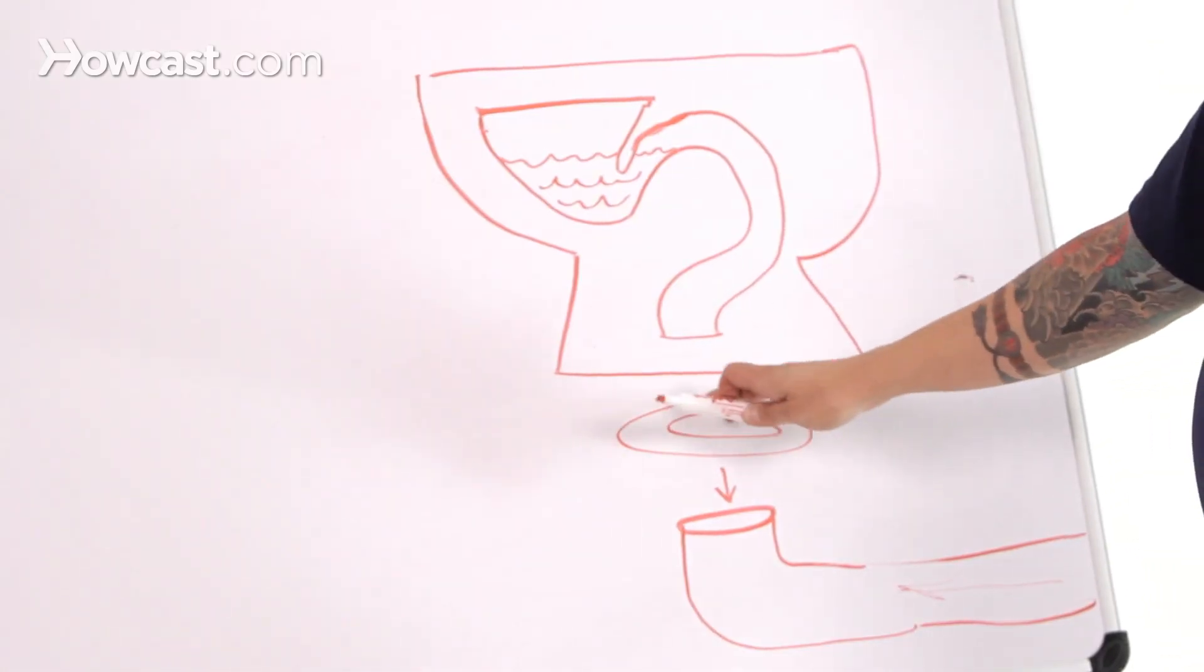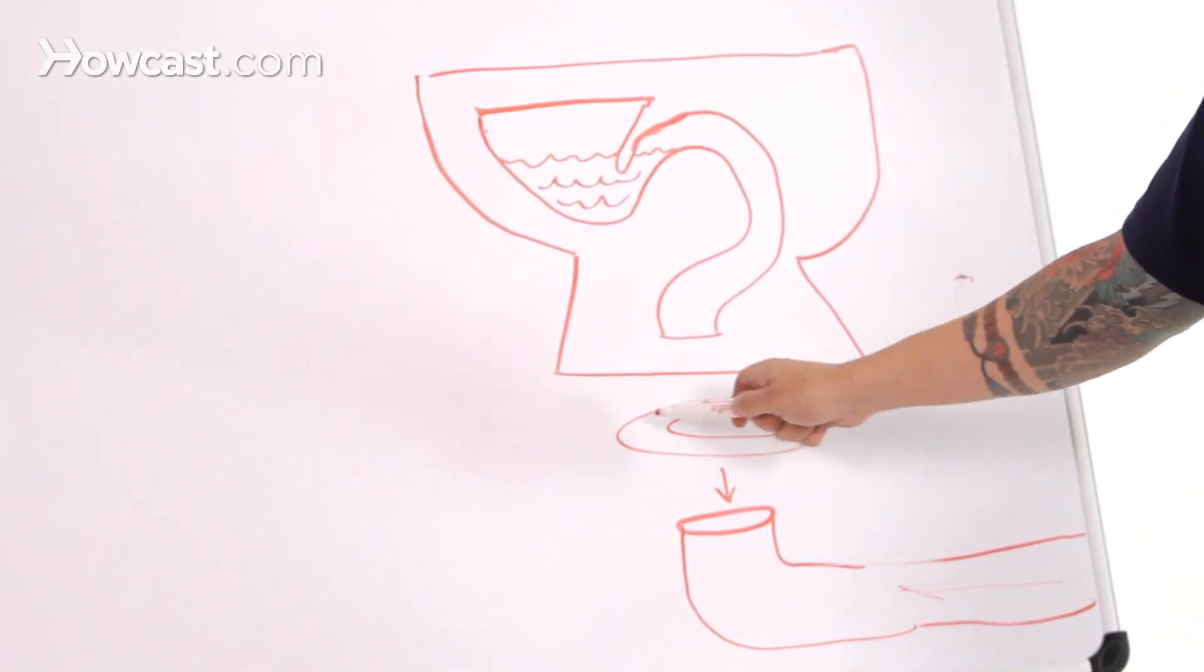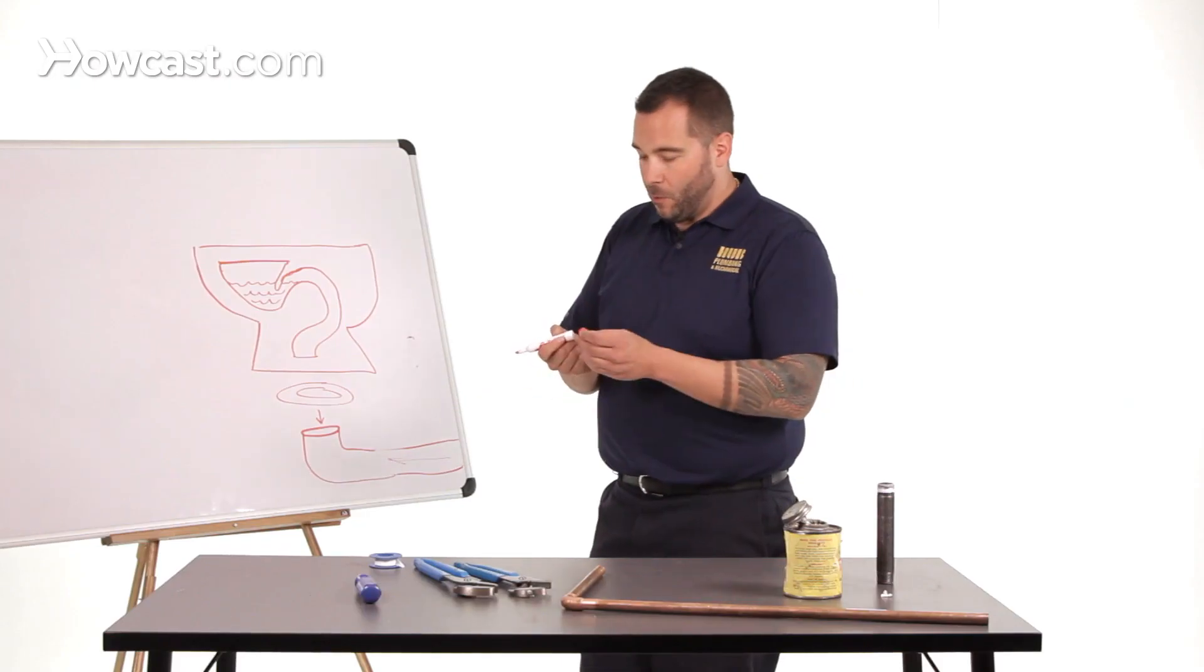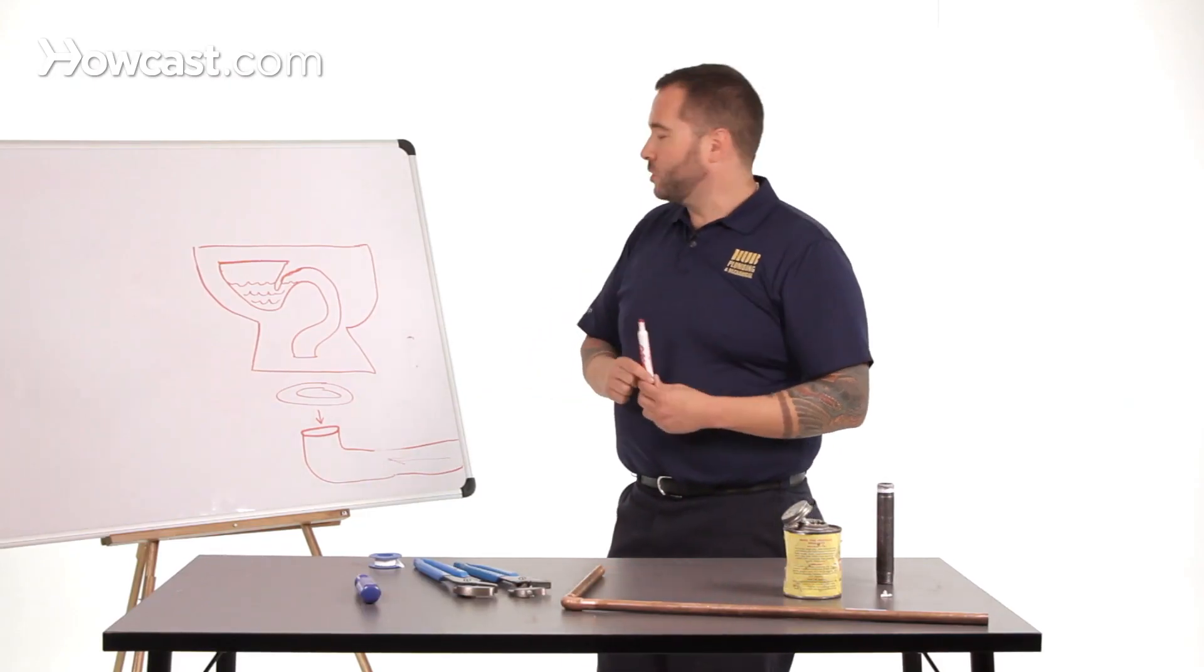And it's got one watertight seal here. This is the wax ring. You've probably seen a wax ring, or maybe you haven't, below a toilet bowl.